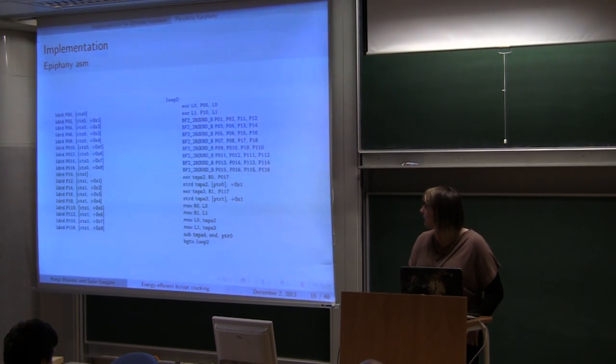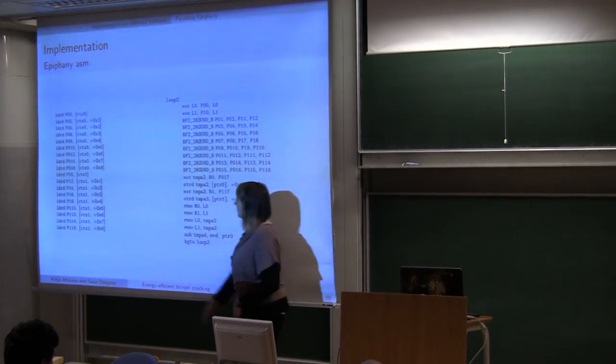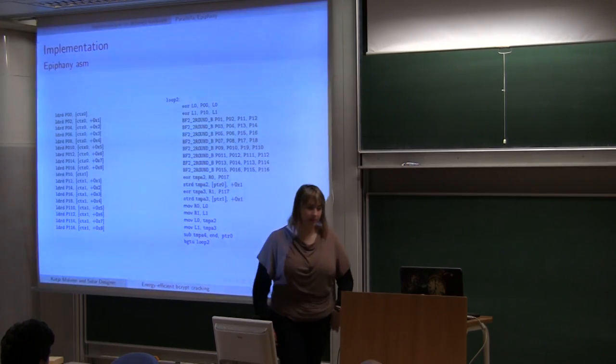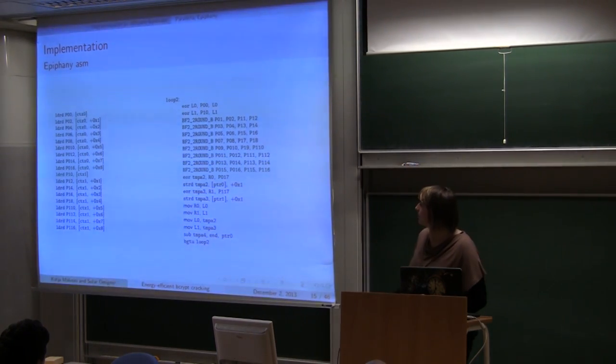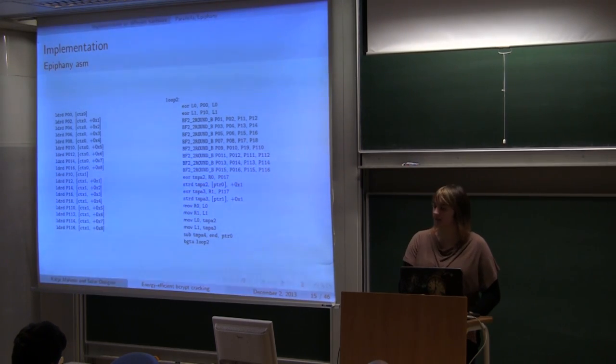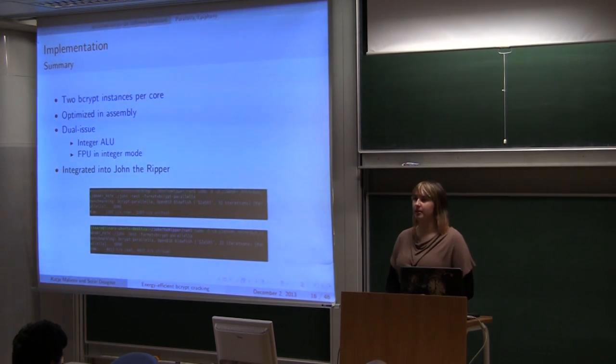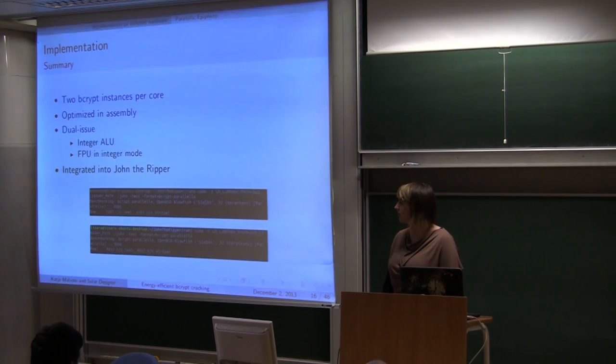Another very useful thing on Epiphany are double loads. Where we were able to do it in half of cycles that would need if there would not be double loads. So in total we have two Bcrypt instances per one core. We optimized it in assembly used dual-issue architecture and integrated in John the Ripper.